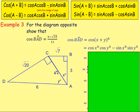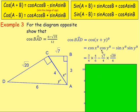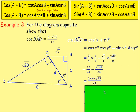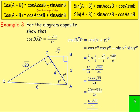Cos x is adjacent over hypotenuse, so 3 over 4. Cos y is adjacent over hypotenuse for the other triangle: 4 over 6. Subtract sin x (opposite over hypotenuse): √7 over 4, multiplied by sin y: √20 over 6. Multiplying numerators and denominators gives 12/24 minus √140/24. Simplify √140 as √4·√35 = 2√35. So we get (12 − 2√35) / 24. Taking out factor 2 gives (6 − √35) / 12, which is what we were asked to show.